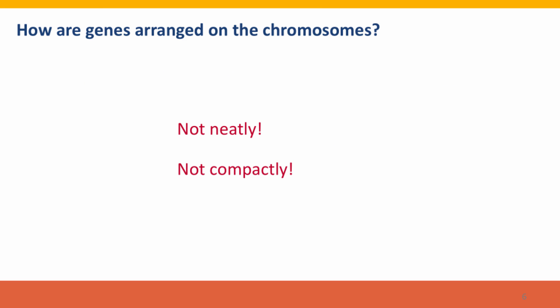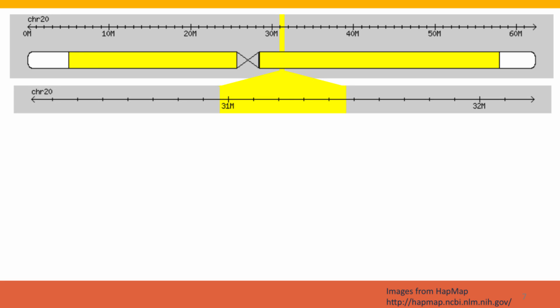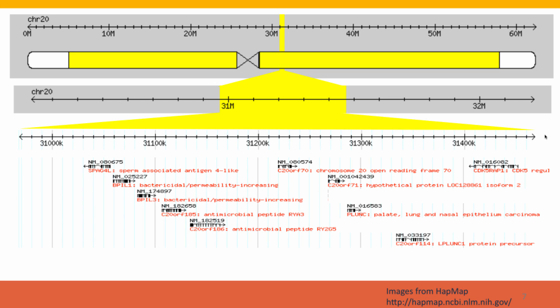That's what one gene looks like. More generally, how are genes arranged on the chromosomes? Not the way I would arrange them if I was tidying things up. Here's a different chromosome — chromosome 20, about 62 megabases long. We're blowing up a segment of it that's about 500 kilobases long. Blowing this segment up and asking where are the genes — there are certainly genes in this segment. There are 10 genes in this 500,000 base pairs of DNA sequence.